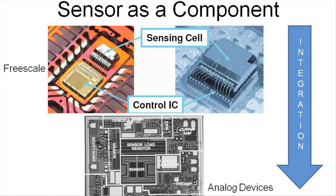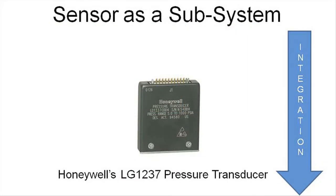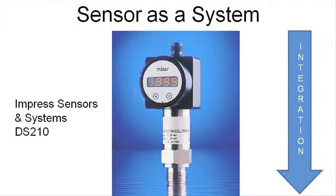An example of a subsystem design is Honeywell's LG1237 pressure transducer. It uses MEMS pressure sensing technology with microprocessor-based signal conditioning to provide greater functionality. The Impress Sensors and Systems DS transmitter is more like a complete system.